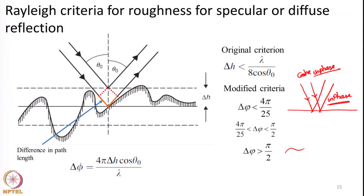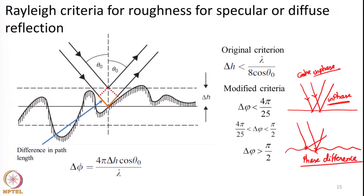Now let us say there is a rough surface. One beam of radiation comes here, one beam comes here. Just because of the presence of roughness, they will be reflected in different directions. Since each wave travels a slightly different distance — one wave stops here, the other travels a little farther to reach this lower point — the distance they travelled varied. Hence the parallelism will be changed. When they are reflected, there will be some sort of phase difference introduced after reflection between rays 1 and 2.